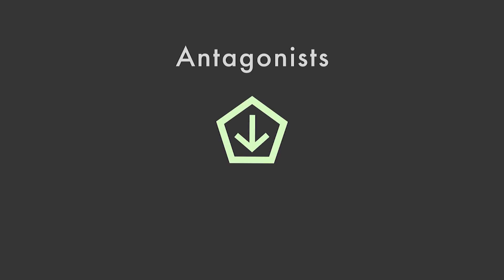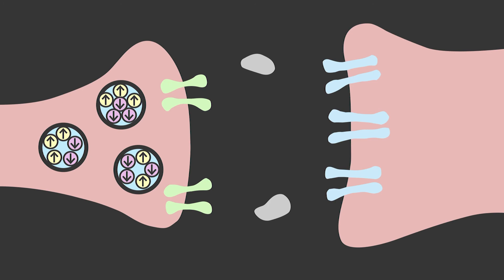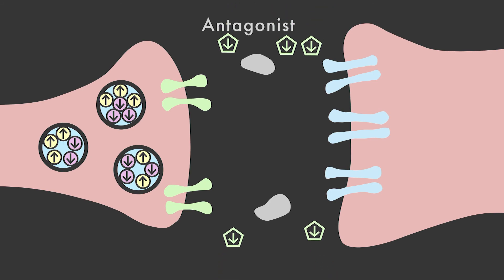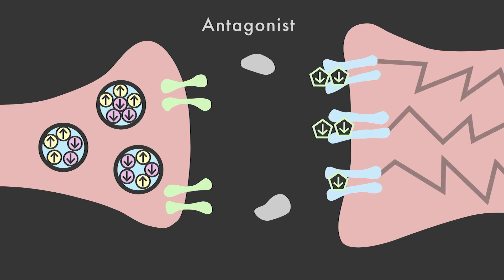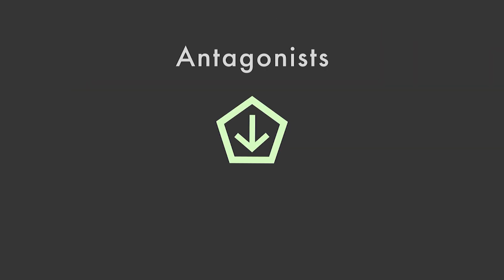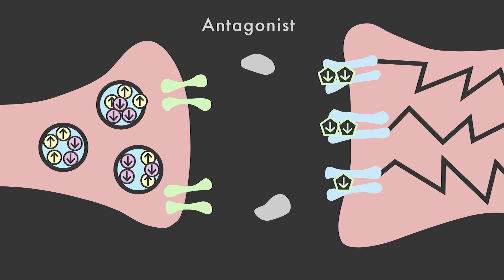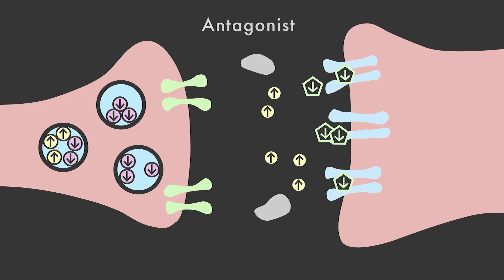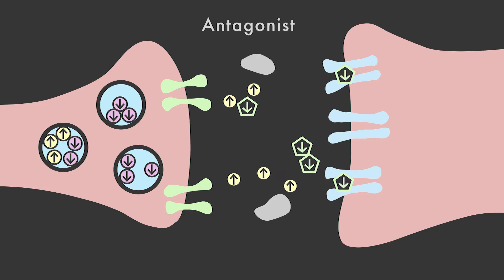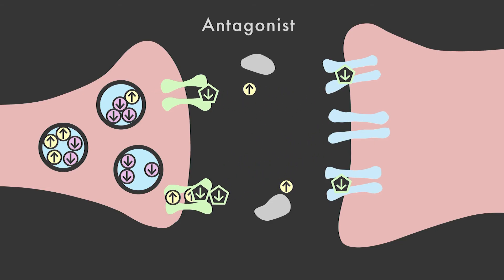Antagonists work through similar mechanisms but with the opposite effect. Some antagonists prevent the transmitter from working by binding themselves to the synaptic receptor and blocking off the transmitter, essentially serving as a kind of putty in the synaptic lock. Other antagonists operate by speeding up reuptake, and others by augmenting cleanup enzymes.